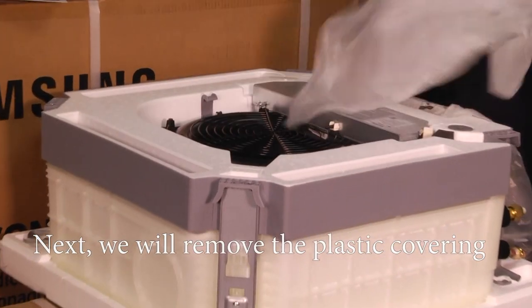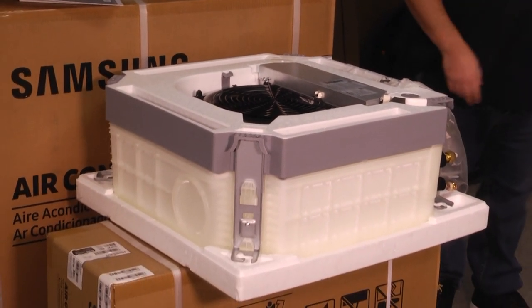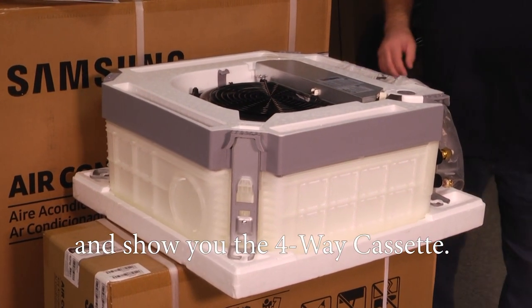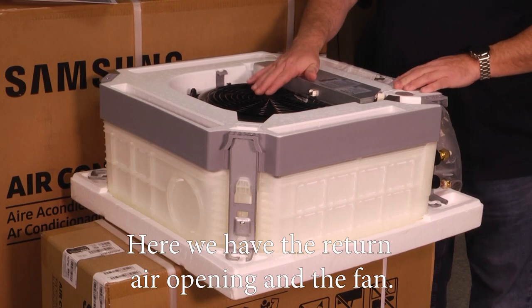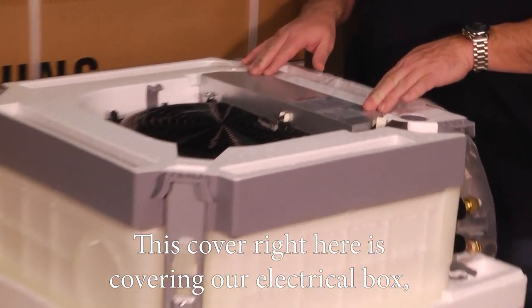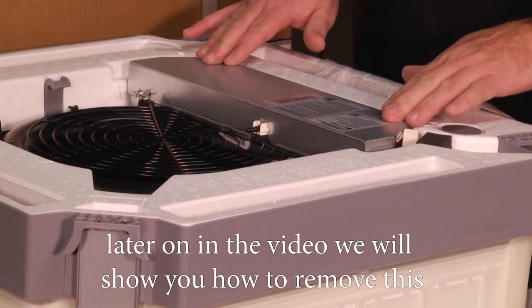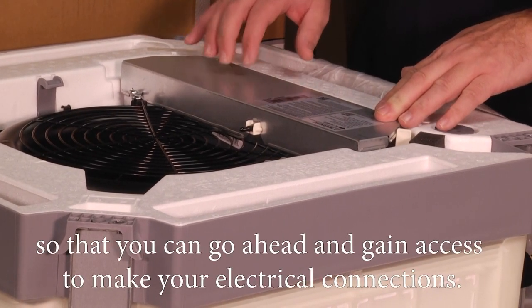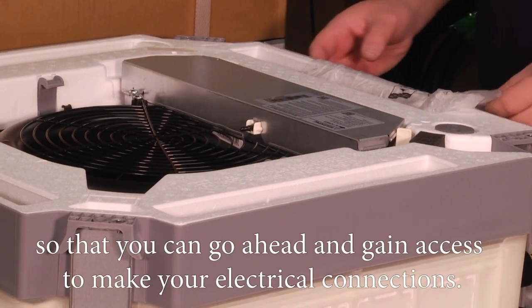Next we'll remove the plastic covering and show you the four-way cassette. Here we have the return air opening and the fan. This cover right here is covering our electrical box. Later on in the video, we'll show you how to remove this so that you can gain access to make your electrical connections.